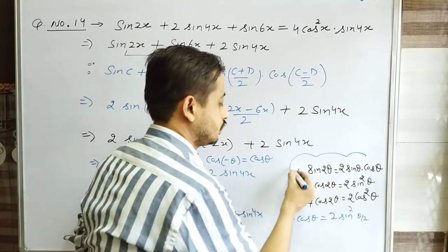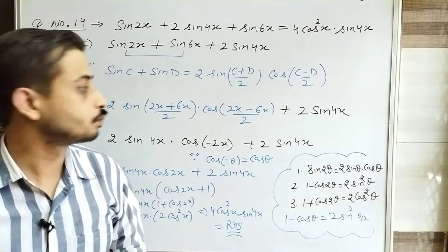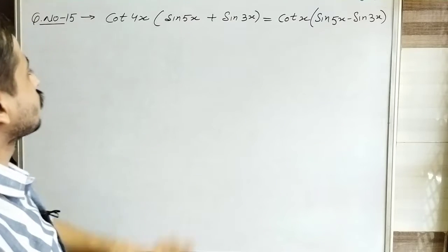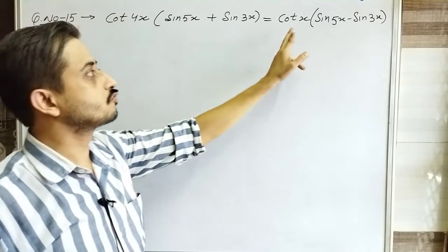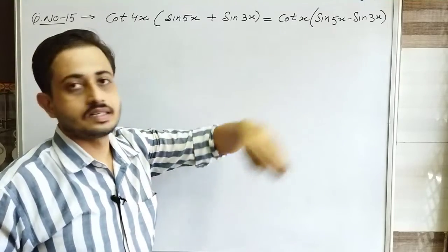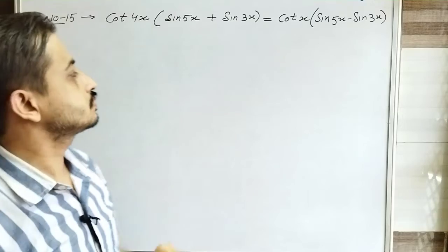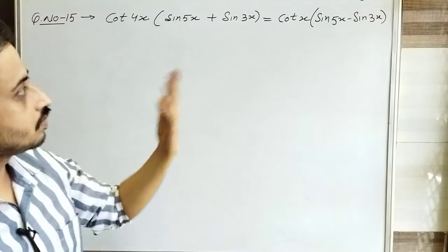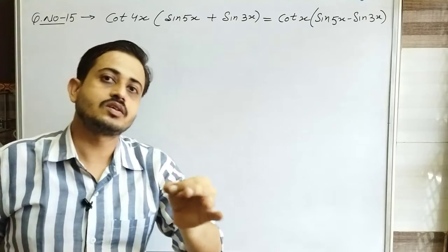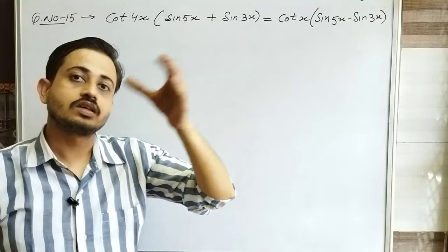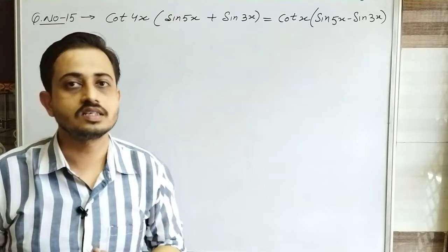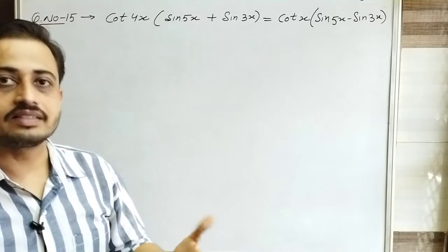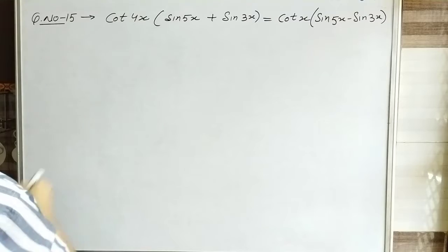Question Number 15: cot4x · (sin5x + sin3x) = cotx · (sin5x - sin3x). Here both sides are quite lengthy. Sometimes you can solve the left side and the right side doesn't appear, and sometimes solving the right side doesn't give the left side. In that case, solve both sides until they become equal.